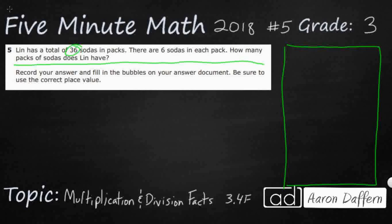There are a few different ways that we can solve this problem. First, I want to start with a strip diagram, just to see if we can get a visual on this problem, because there are only two numbers — 36 and 6. We can add them, subtract them, multiply them, or divide them, and there's no keyword in there to tell us which of those operations to choose. So sometimes a visual will help us.